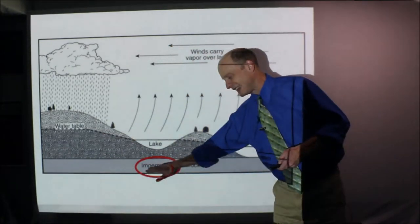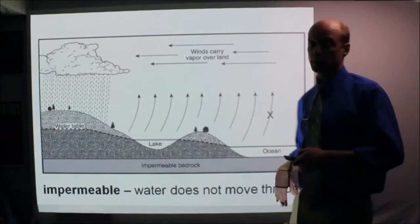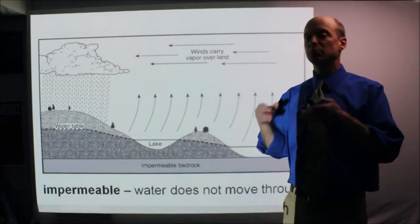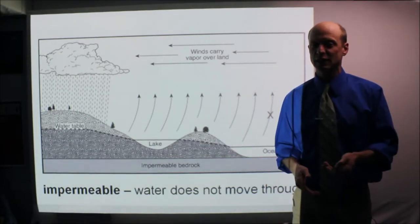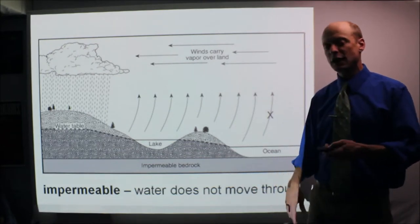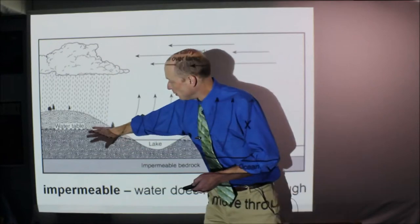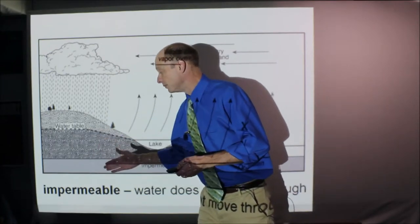Impermeable red bedrock. Impermeable means water cannot move through it. Some things you may know to be impermeable: concrete, pavement, your kitchen counter is pretty impermeable. Water does not go through. A lot of times bedrock can be pretty impermeable, and that kind of stops the water table, the groundwater I'm sorry, from going any further down.